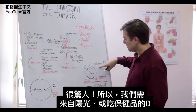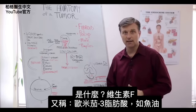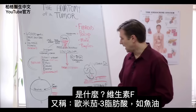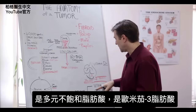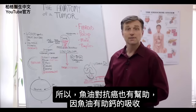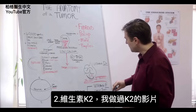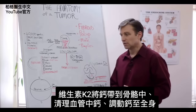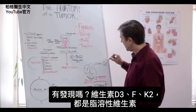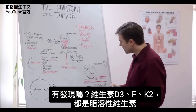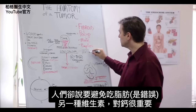So we need vitamin D from the sun or a supplement — always take vitamin D3. We also need vitamin F, which is another name for the omega-3 fatty acids like in fish oil — those polyunsaturated fatty acids. That's why fish oil is also good for anti-cancer: it helps you absorb calcium. Vitamin F transports calcium into the tissues, and then vitamin K2 drives the calcium all the way into the bone, cleans up the arteries, and helps mobilize calcium through the body. Notice that vitamin D3, vitamin F, and K2 are all fat-soluble vitamins, so we need fat to mobilize calcium — and yet people are told to avoid fat.